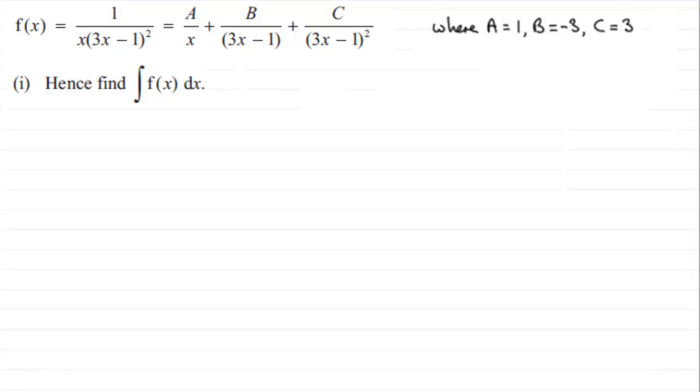So first of all what I'd want to do is just put in these values for A, B, and C as 1, minus 3, and 3. And then because we're integrating f(x) with respect to x, it's the same as the integral of each one of these terms.